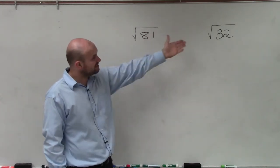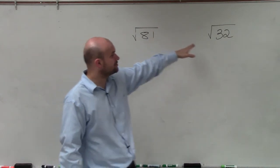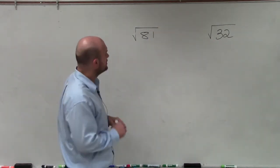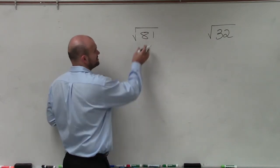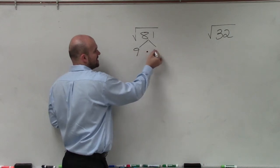Because 32 is not a square number, right? So we're going to use prime factorization to simplify this, just like we can simplify this with 9. The best thing to do is we need to break this down into our factors. So I can break 81 into 9 times 9.